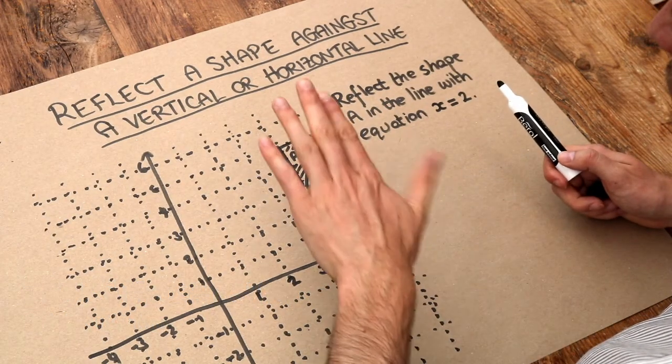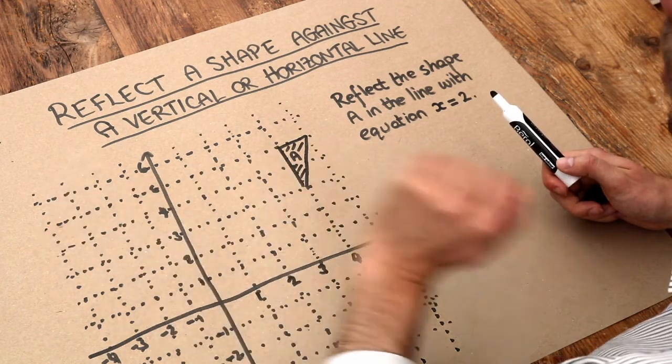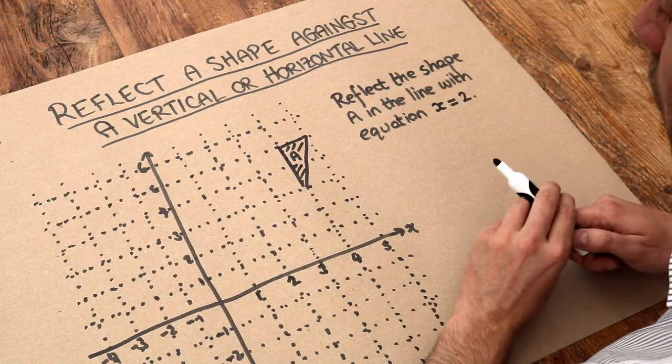Now you may be aware that reflection is just when you flip a shape over, but we have to say the line we're reflecting in.